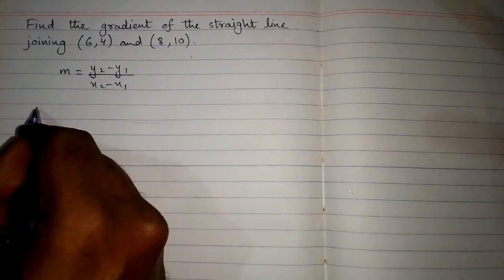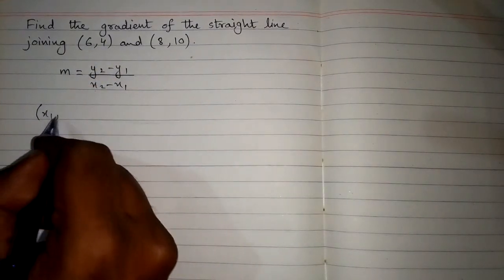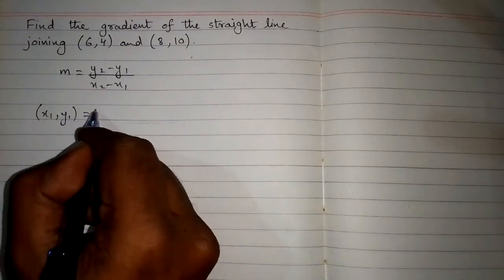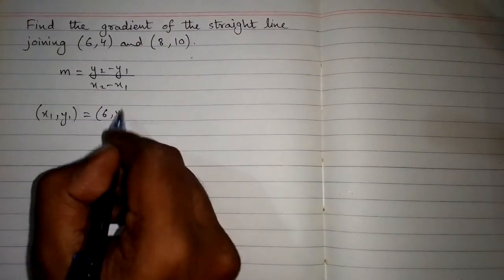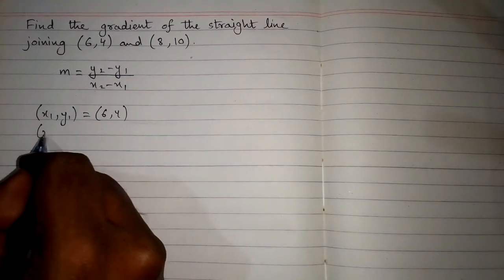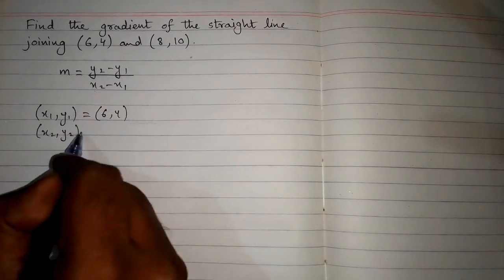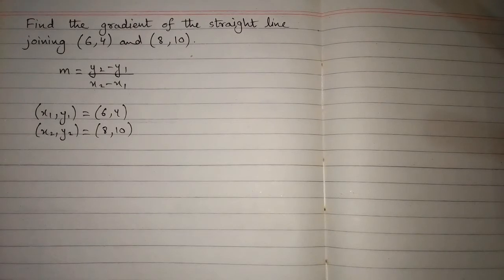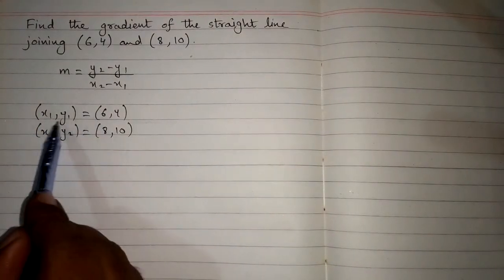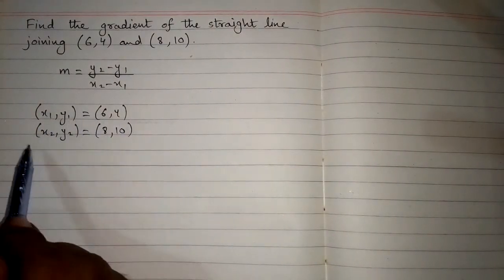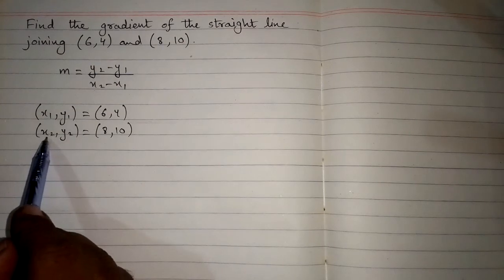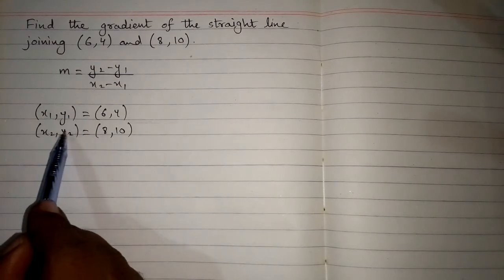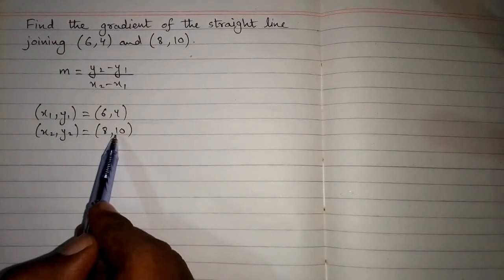So first of all we will suppose that the point (6,4) is (x1,y1) and then the other point is (x2,y2) which is equal to (8,10). So the value of x1 is 6 and the value of y1 is 4, and here the value of x2 is 8 and the value of y2 is 10.